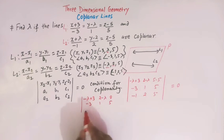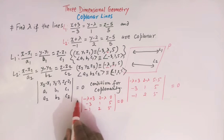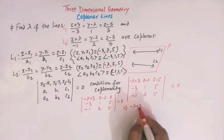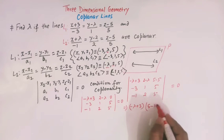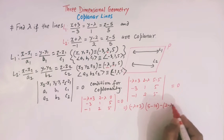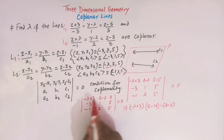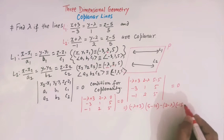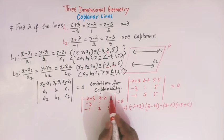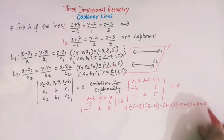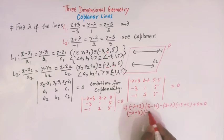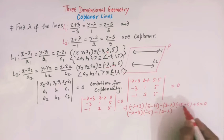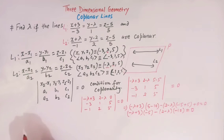Expanding the determinant along the first row: the first element (-λ + 3) multiplied by (1×5 - 5×2) gives (-λ + 3)(5 - 10) = (-λ + 3)(-5). The second element (2 - λ) gives the cofactor (-3×5 - 5×(-1)) = (-15 + 5) = -10, so contribution is -(2 - λ)(-10). The third element is 0, so that term vanishes.